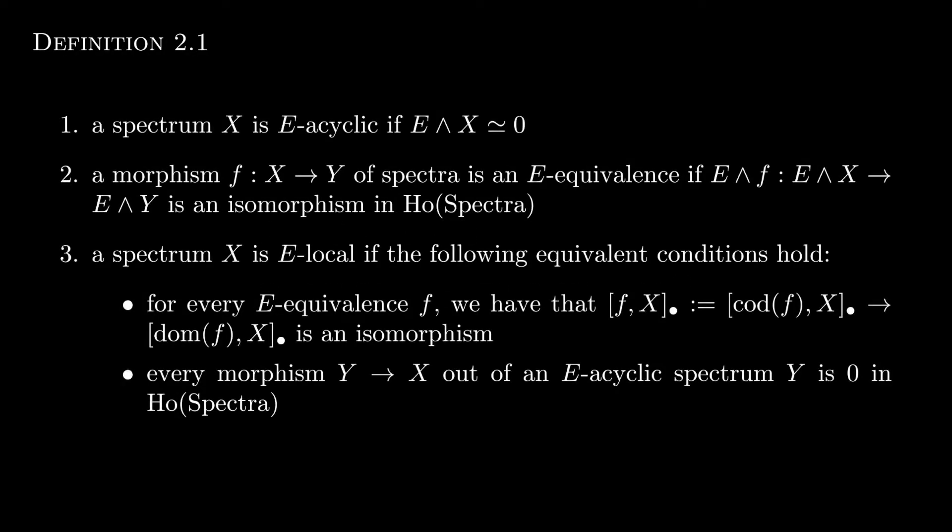Now we have some important definitions. To begin with, a spectrum X is E-acyclic if E smash X is 0. Okay, so the way I'm thinking about this is even though X may not be 0 in general, it is 0 from the perspective of E. So like, where E is standing, it can't see X. Sorry if that wasn't a helpful analogy, that's just how I'm trying to digest the definition.